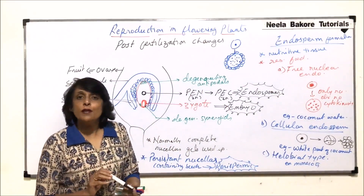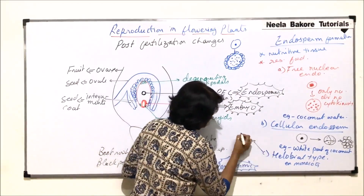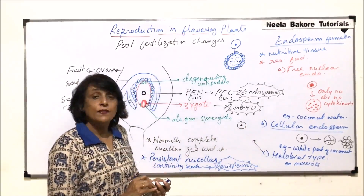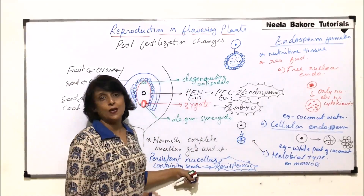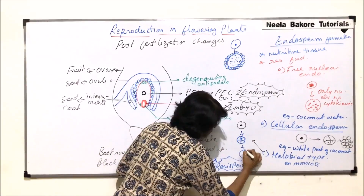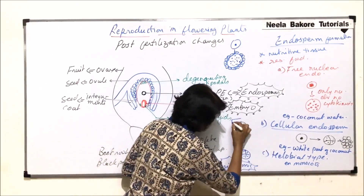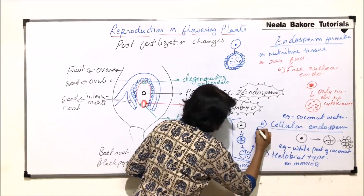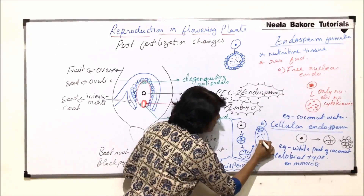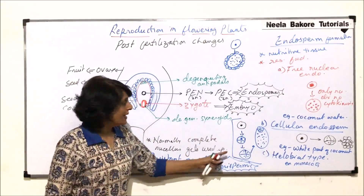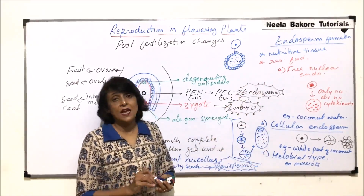The third type of endosperm is known as helobial type. Helobial endosperm is normally seen in monocots and it is an intermediate type. The first two or three divisions of the primary endosperm cell are normal cellular divisions — forming two cells, then four cells. After that, some cells undergo only free nuclear divisions. So initial cell masses form with proper division, and then it proceeds by free nuclear division. That is why helobial is called the intermediate type between free nuclear and cellular endosperm.